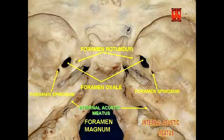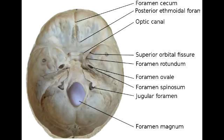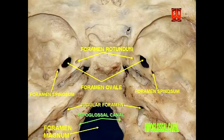What cranial nerves and vessels pass through the jugular foramen? Cranial nerves 9, 10, and 11, as well as the jugular vein, pass through the jugular foramen. What cranial nerve passes through the hypoglossal canal? Cranial nerve 12, the hypoglossal nerve, passes through the hypoglossal canal.